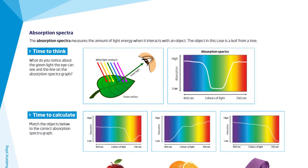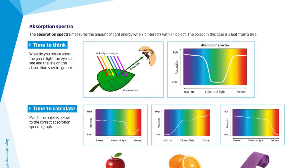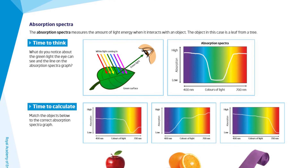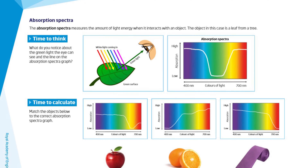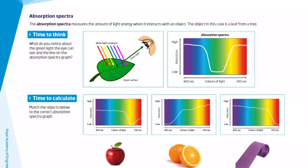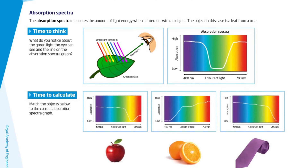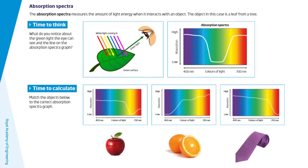We then go on to introduce something called an absorption spectra. It's something that students probably wouldn't have come across in school before, but it's a really nice activity to get them to problem-solve and work out if they can make the link between the absorption spectra graph and the diagram on the page. Absorption spectra is a way to show what colors have been absorbed and therefore what color you will see, and they can go on to try and match different objects of different colors to the different graphs on the resource.